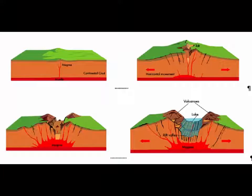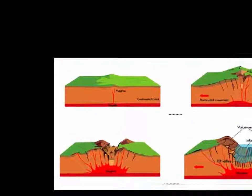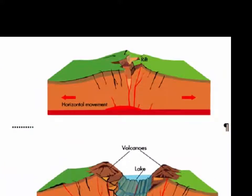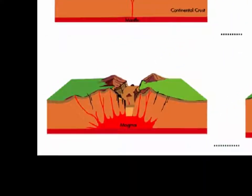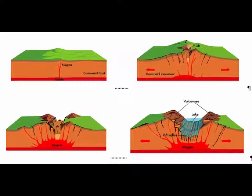In the last video we learned about the plate tectonic theory and how this theory is used to explain natural events like volcanoes and earthquakes at divergent boundaries. In this video we will look at two other types of boundaries, convergent and transform.